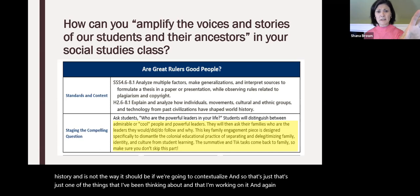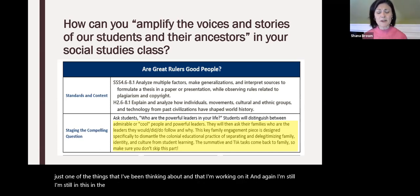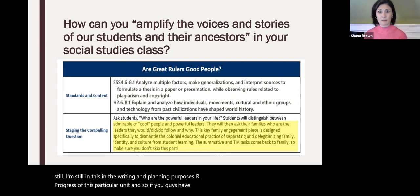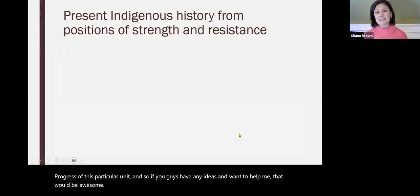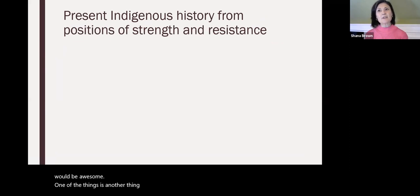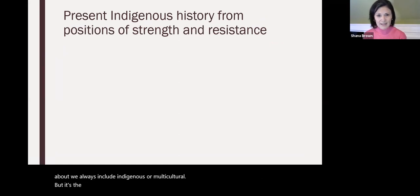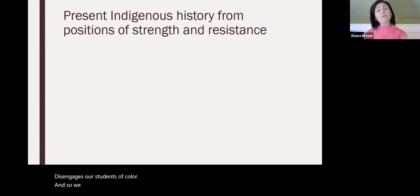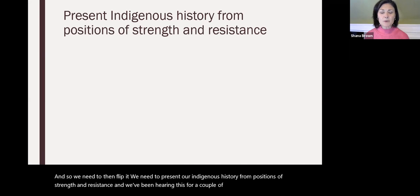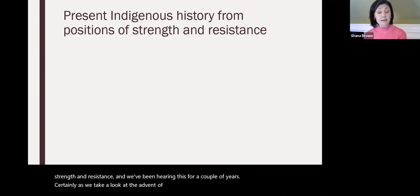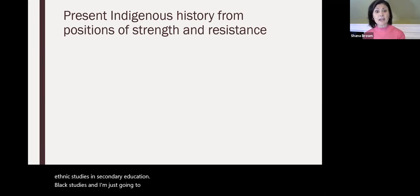I'm still in the writing and planning stages of this particular unit, so if you have ideas and want to help, that would be awesome. Remember at the beginning I talked about how we always include indigenous or multicultural history, but it's the way we present it that still disengages students of color. We need to flip it and present our indigenous history from positions of strength and resistance. We've been hearing this for a couple of years as we look at the advent of American Indian studies, ethnic studies, and Black studies in secondary education.